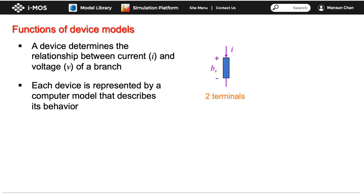A device determines the relationship between the current and voltage of a branch, as shown in the picture here. Let's call the voltage across the branch BV. In a circuit simulator, each device is represented by a computer model that calculates the current flowing through it given a voltage applied to it. For example, in a 100 ohm resistor, I will be given by BV over 100.